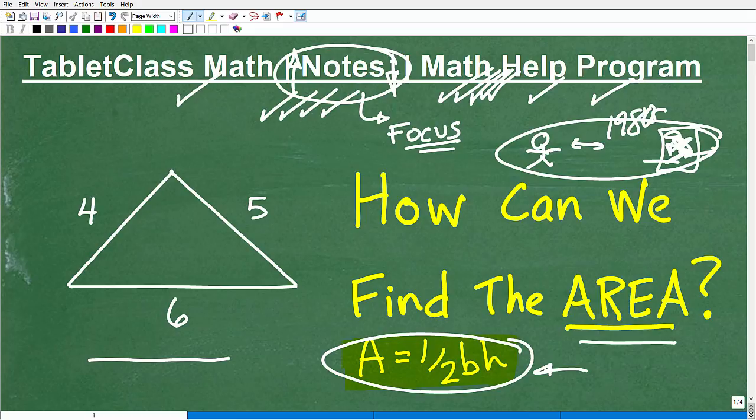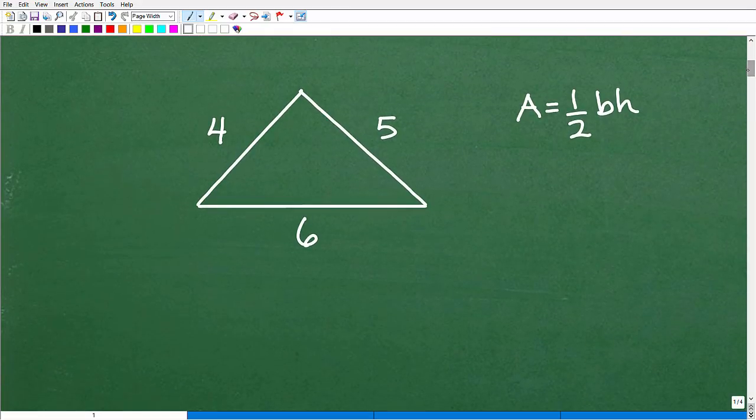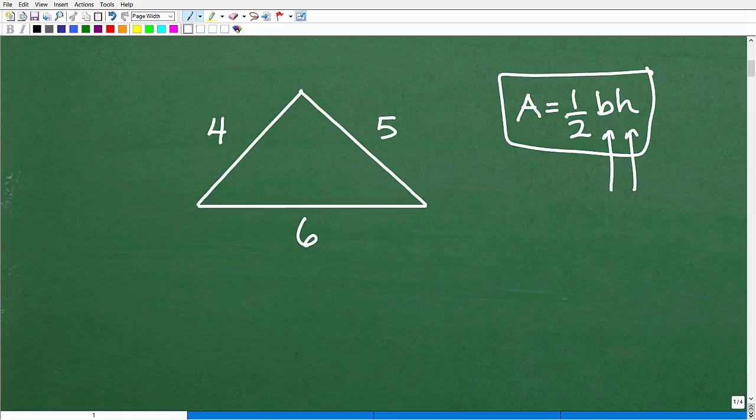Now, by the way, if you think you know how to do this problem, go ahead and pause the video and do it. But let's get to it. All right, so here is our triangle and here is our trusty formula: area equals one-half base times height. So again, if you were thinking, oh, I know how to find the area of a triangle, I use this formula. The problem is with this particular formula, you need these two pieces of information.